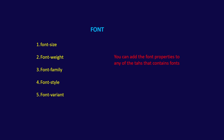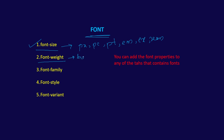The first one is font size. Whenever you are going to add your font size, you can use pixels, picas, points, em, ex, rem, etc. Then next you have font weight. Here you can use the properties bold, bolder, light, lighter, or any weight ranging from 100 to 900.